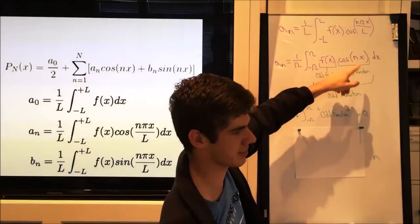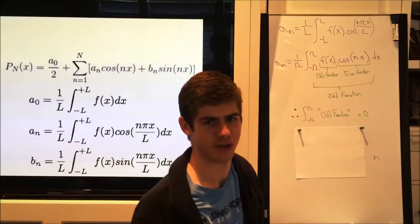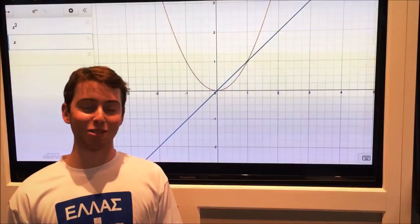x times cosine n times x is an even function, we can time them together and get an odd function. And Sean will show you how to do this.